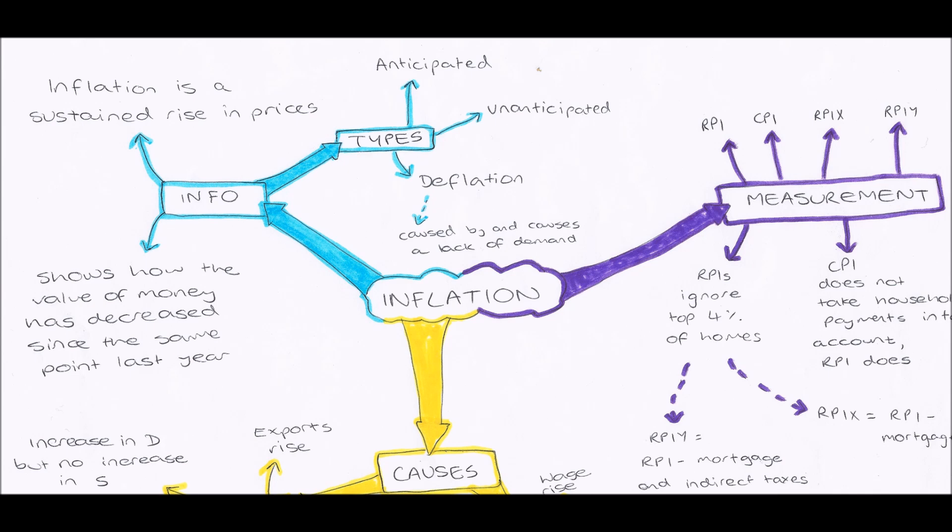What they do is each of these indexes will have a basket of goods, and by basket of goods I mean things that people regularly buy. So things like bread, things such as mobile phone contracts, things such as mobile phones, all those kind of things that people buy on a regular basis will be in this basket.